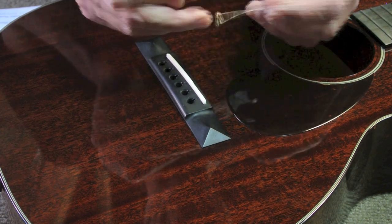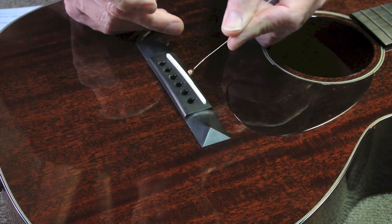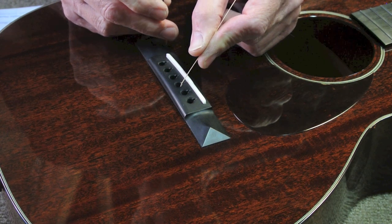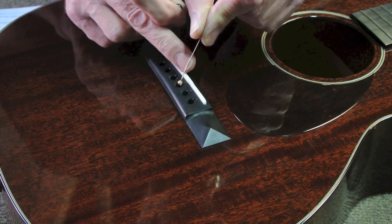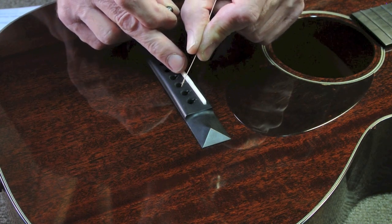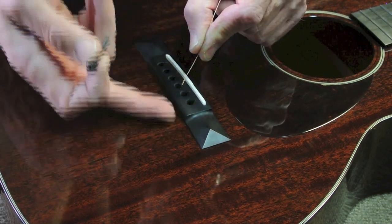And here's the trick. Ball end of the acoustic string down into the slot there. So I usually put them in on a really slight angle like that so that the ball end goes past the soundboard of the guitar.